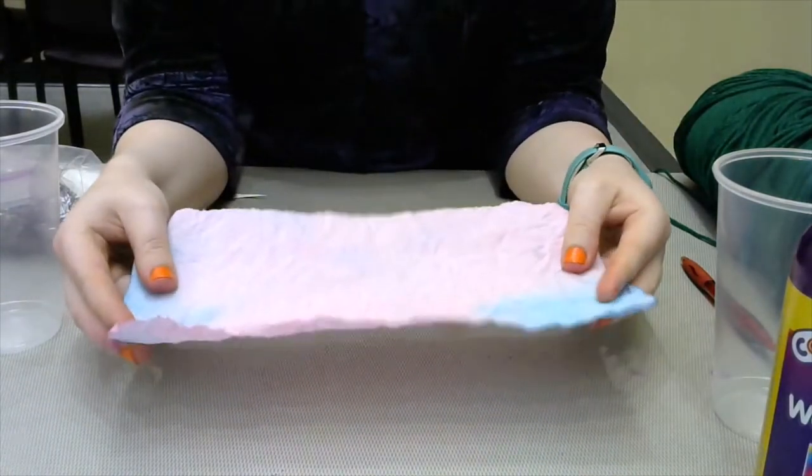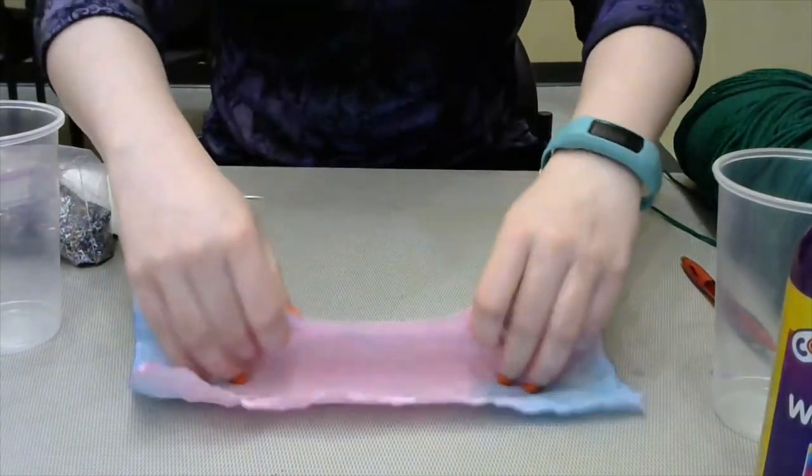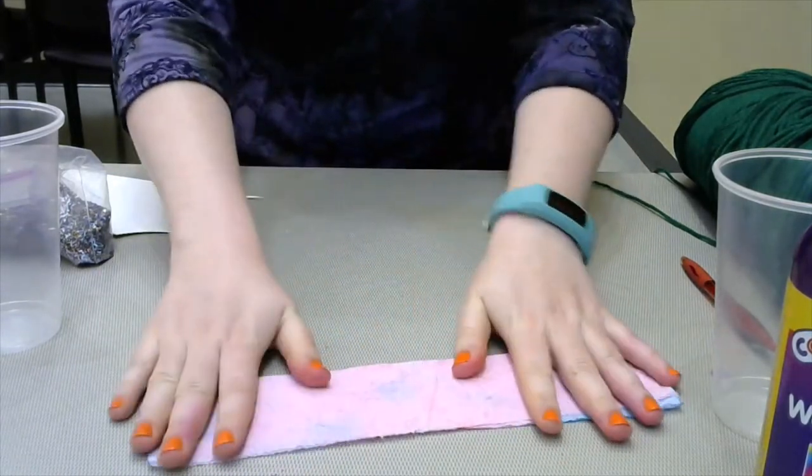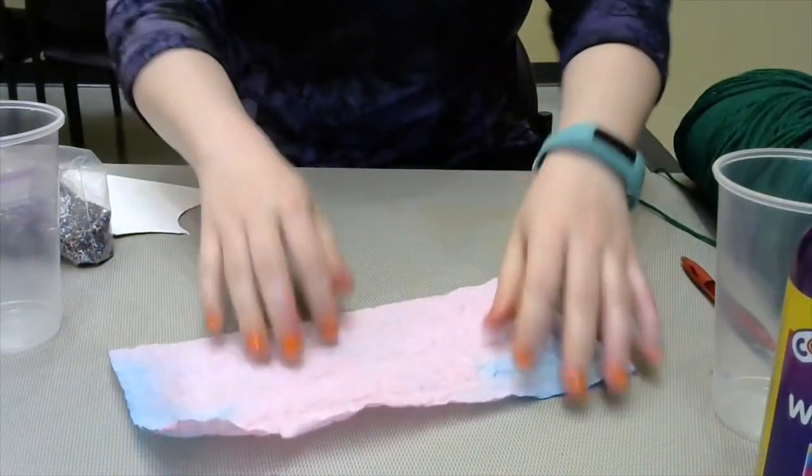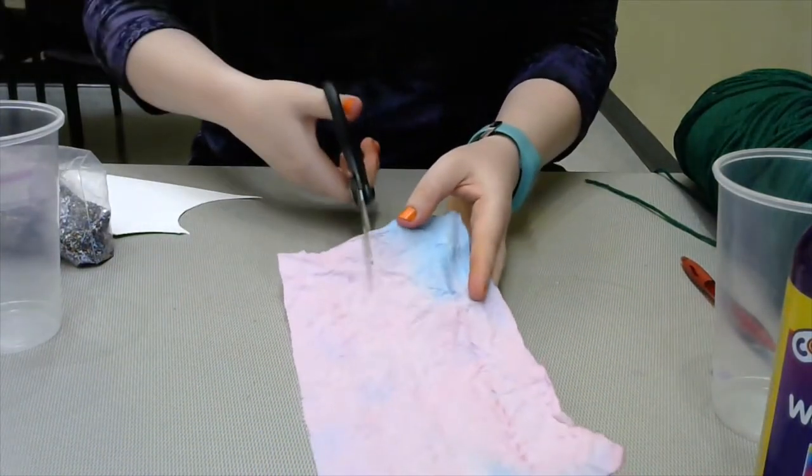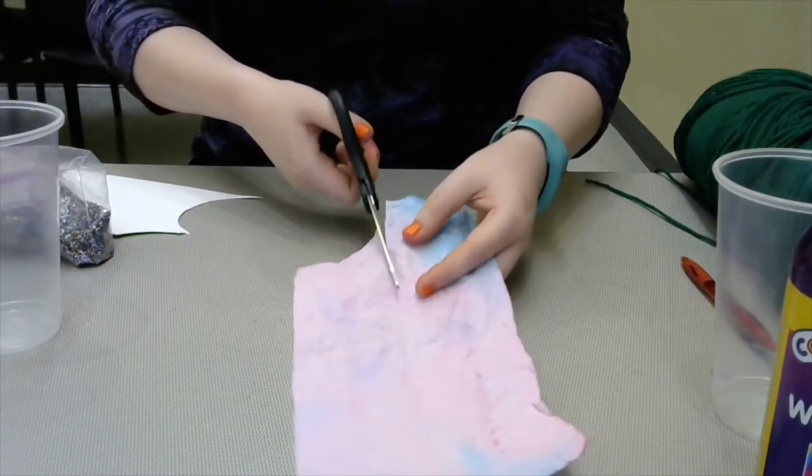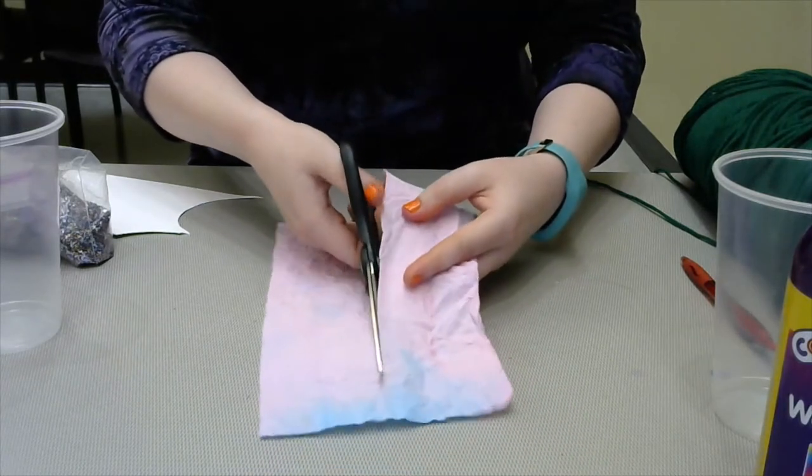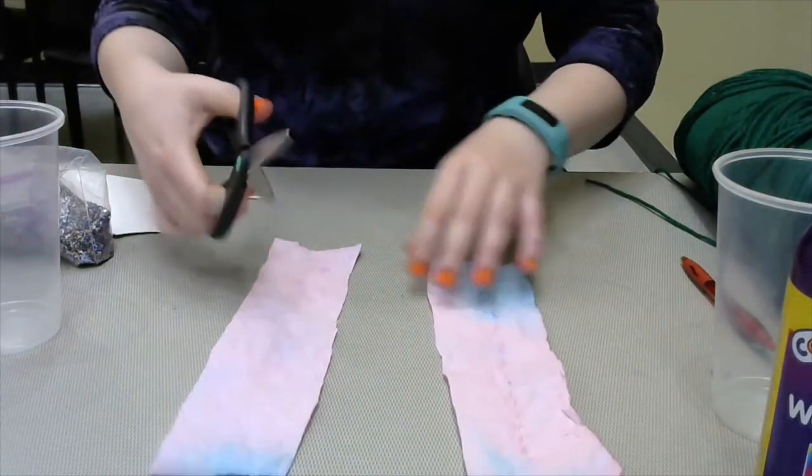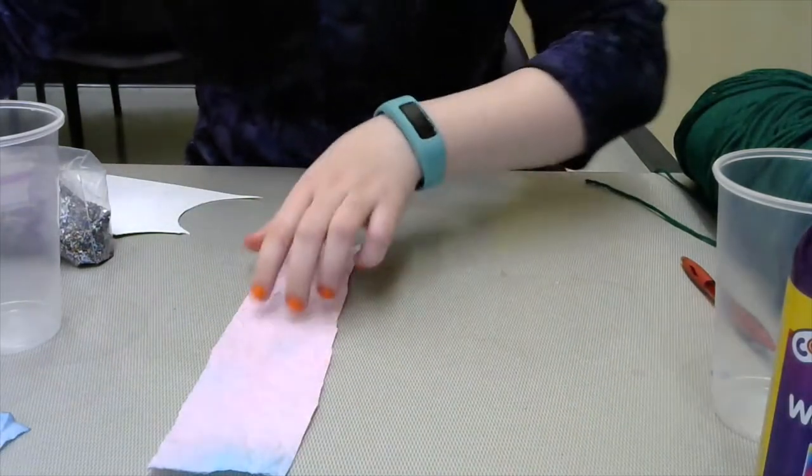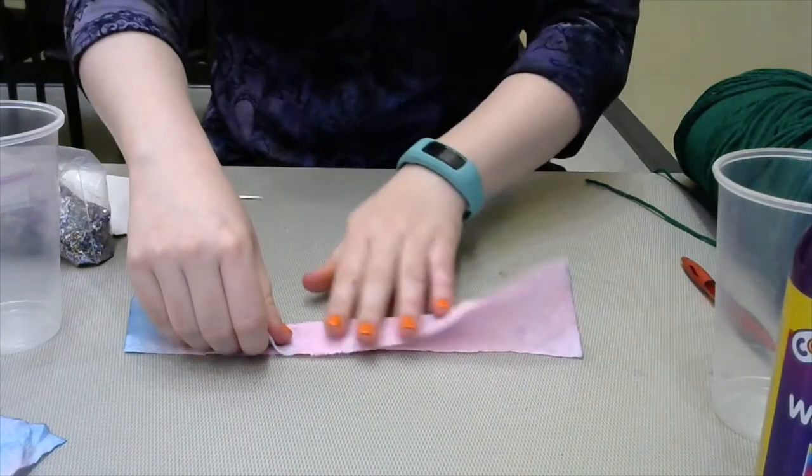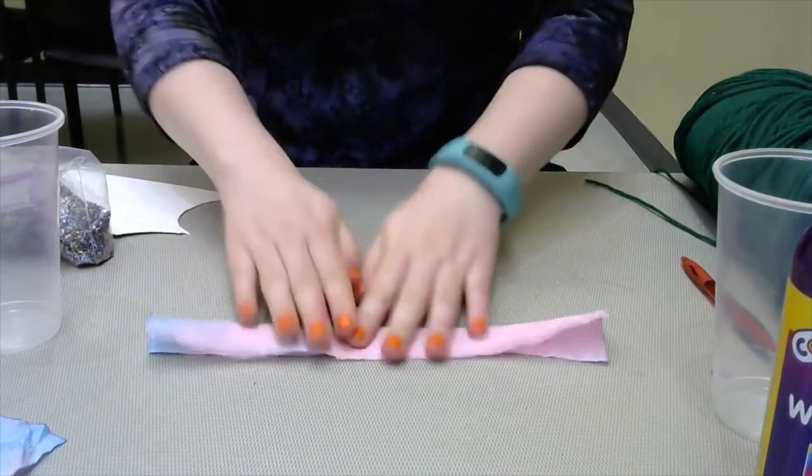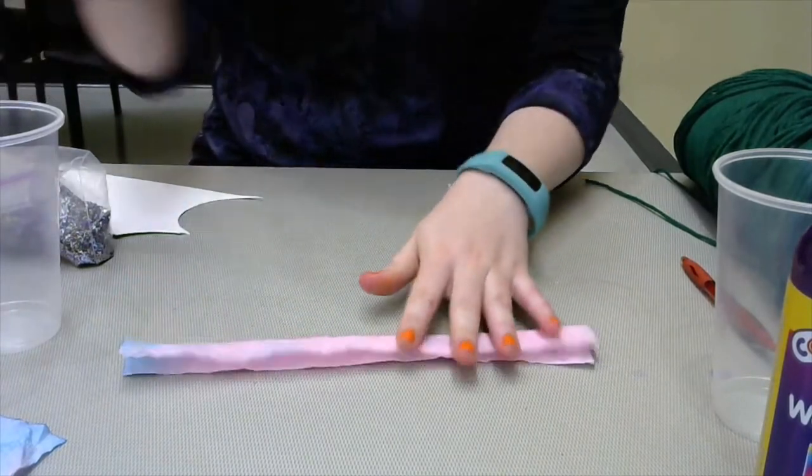So once your paper towel is all dry you're going to fold it in half just so we can get the crease because we're actually going to cut this in half. So now I can kind of see where the middle is. I'm going to cut it in half. So we have our two lovely halves. I'm going to set one to the side for right now and then I'm going to fold another one in half again like so and then I'm going to take my stem.